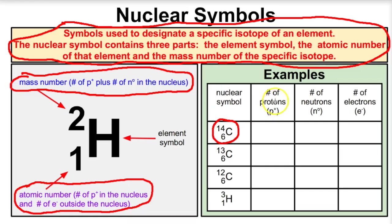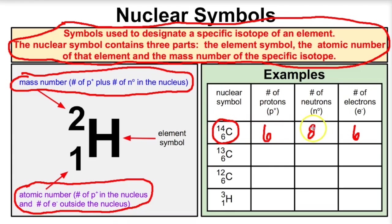We're asked to figure out how many protons there are. The atomic number is going to be the number of protons in that nucleus, so there are six protons. This is also the number of electrons in the electronic cloud, so there are six electrons. To figure out the number of neutrons, we take the mass number 14 minus six, and we end up with eight. So this isotope of carbon has six protons in its nucleus, eight neutrons in its nucleus, and six electrons outside of its nucleus.